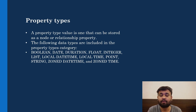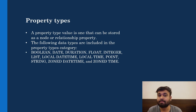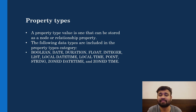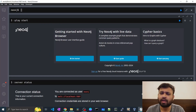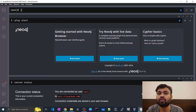A property graph means the graph will have different nodes, and nodes will have different properties, as well as relationships that can also have some properties — that's nothing but a property graph. Let's talk about some of the most common data types we are going to use throughout this series.